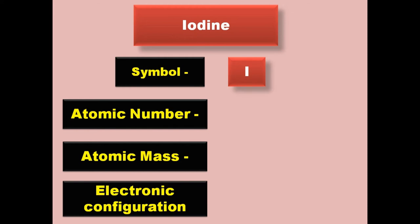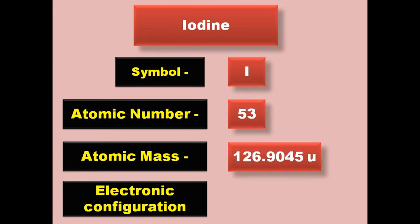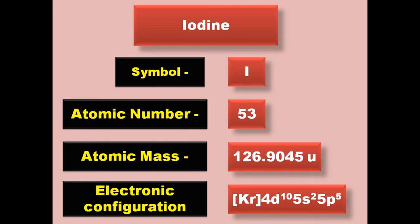Iodine has symbol I, atomic number 53, atomic mass 126.9045, electronic configuration [Kr] 4d10 5s2 5p5. Iodine is a halogen and exists in solid form at room temperature.